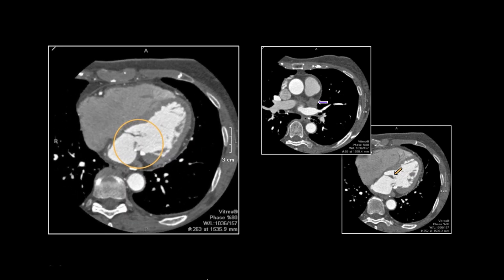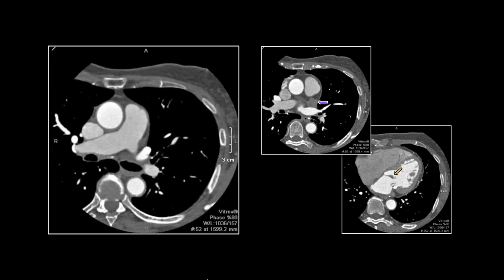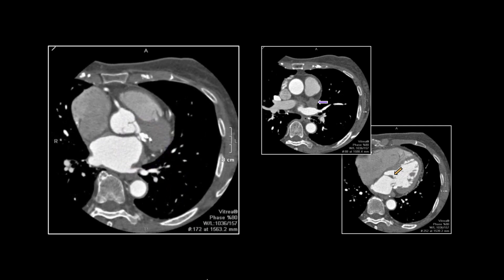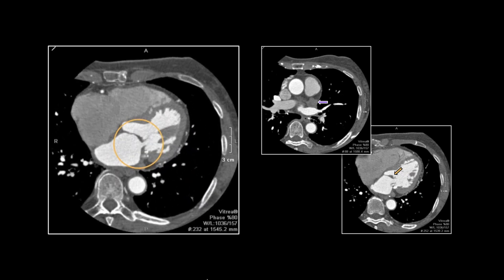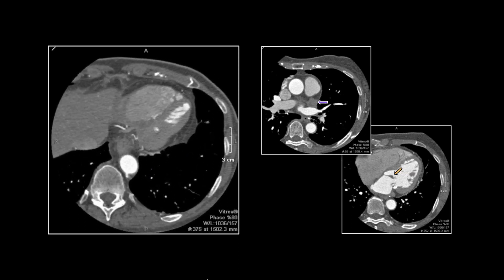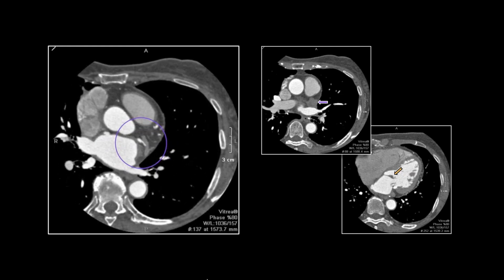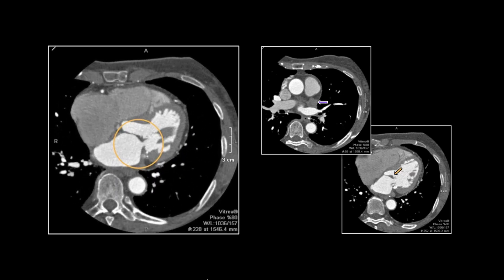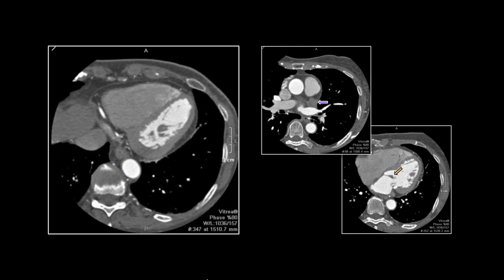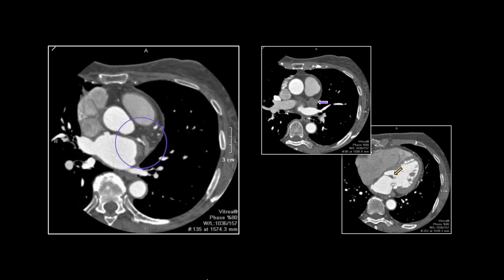Look at that annular calcification and even valve cusp calcification there in the mitral valve. So: thrombosed atrial appendage, annular calcification, and the thickening and irregularity of those valve cusps — it all fits together. You've got stasis, a little bit of left atrial enlargement, but probably stasis in that appendage related to mitral stenosis that ultimately resulted in its thrombosis.